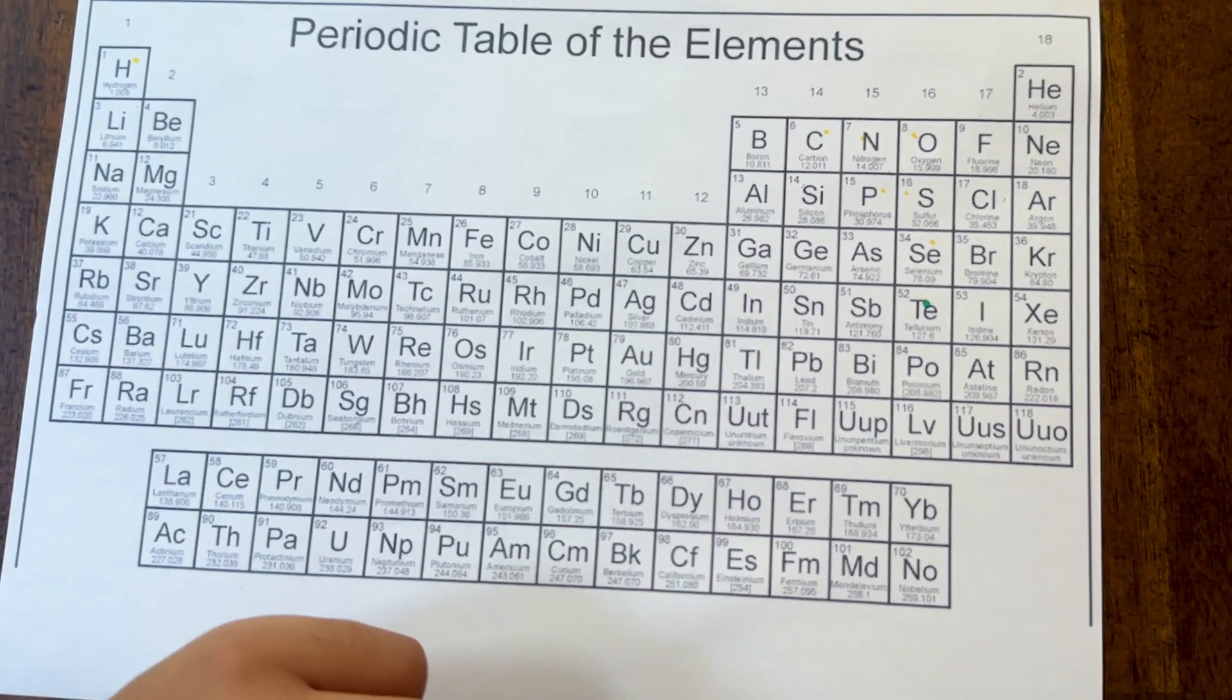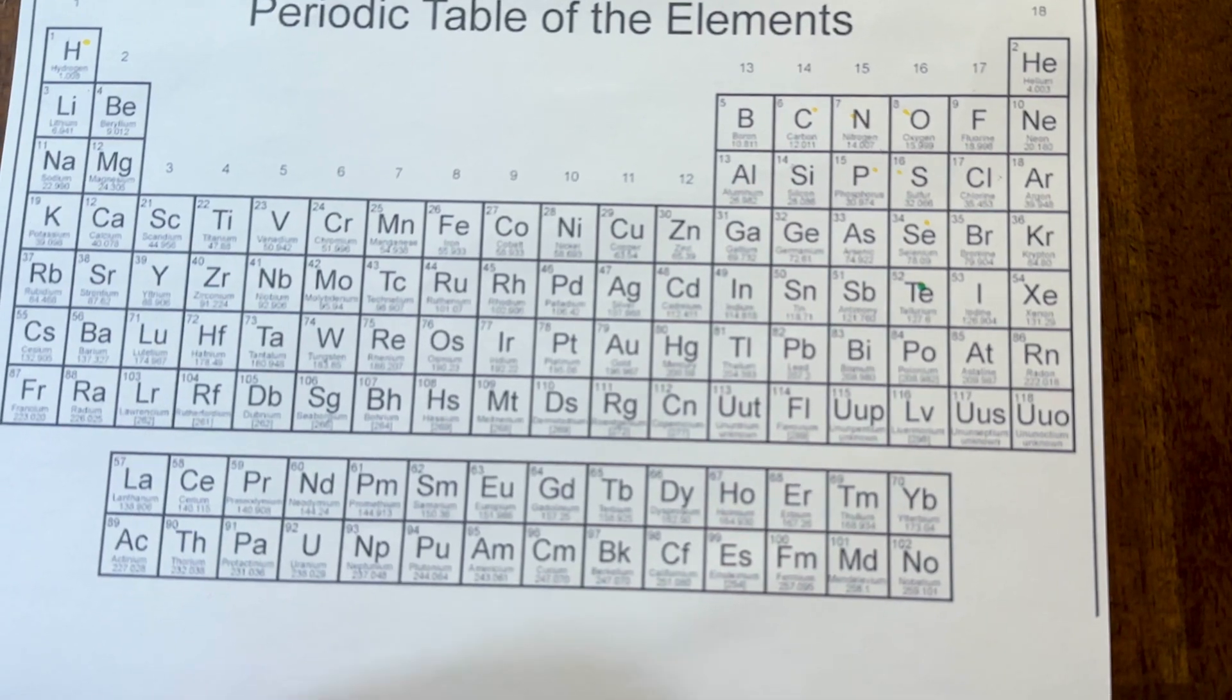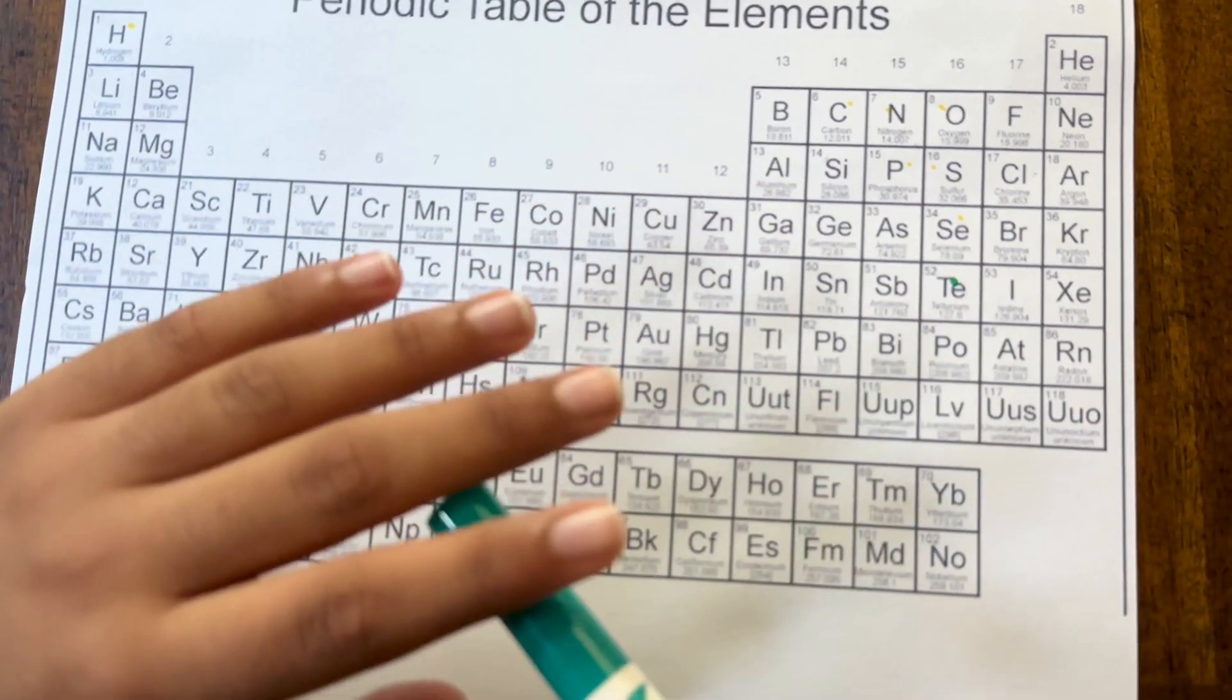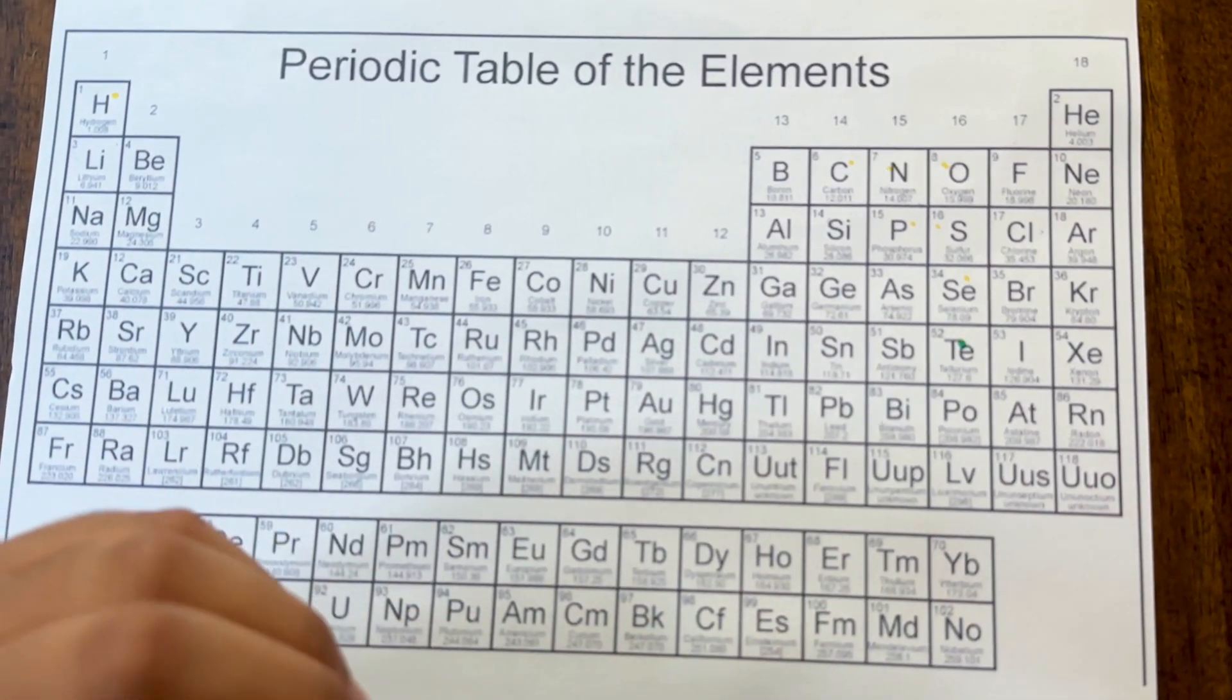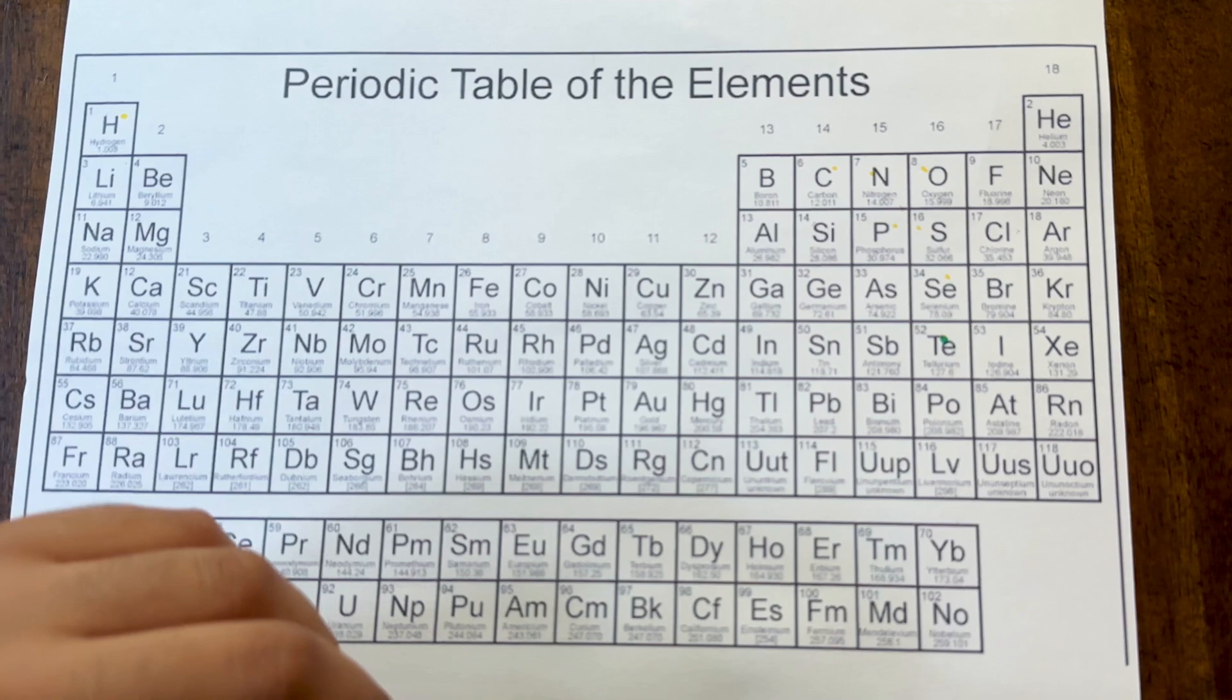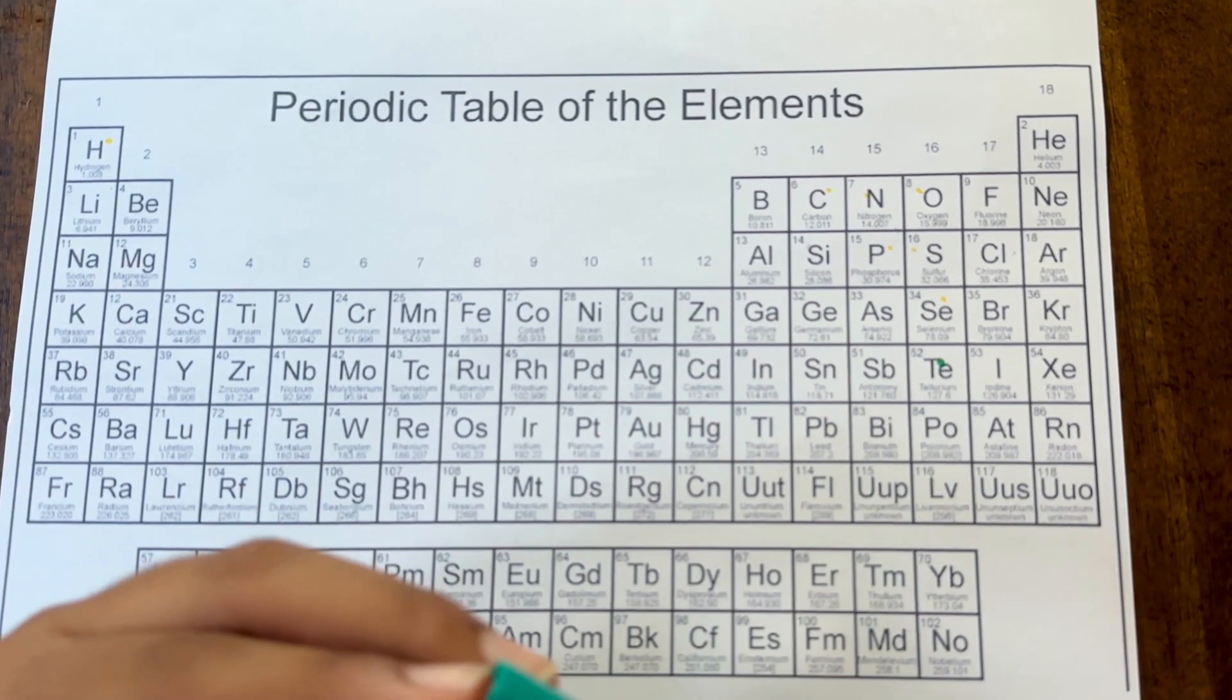In this video, we're going to be talking about the periodic table of elements. The periodic table is a classification of elements based on how they react to the outside environment, the number of valence electrons they have, and how reactive they are with other elements and their purpose in our world.